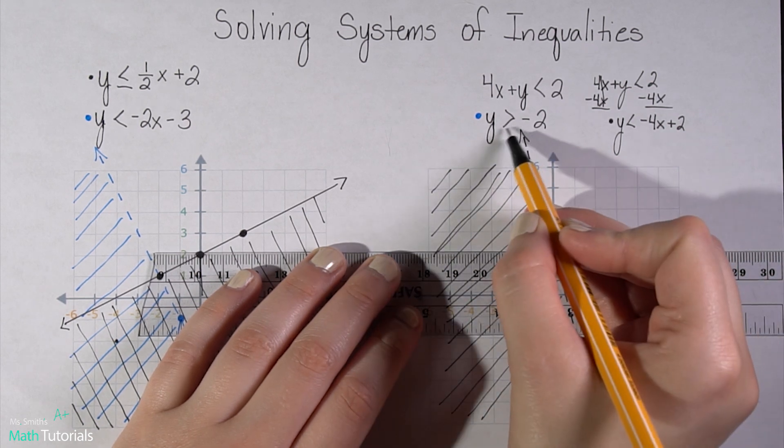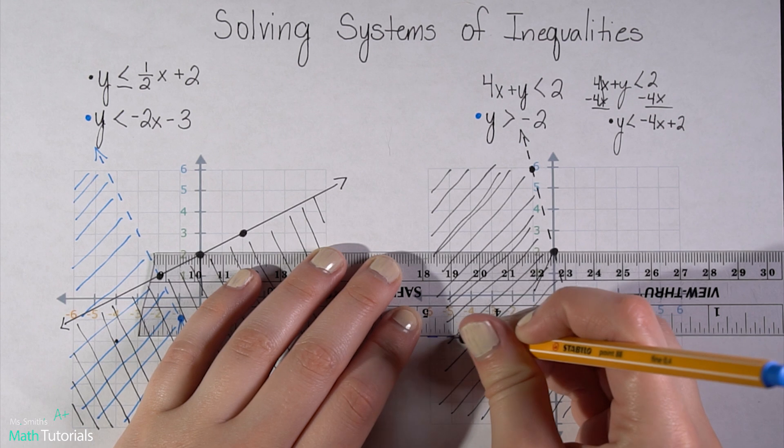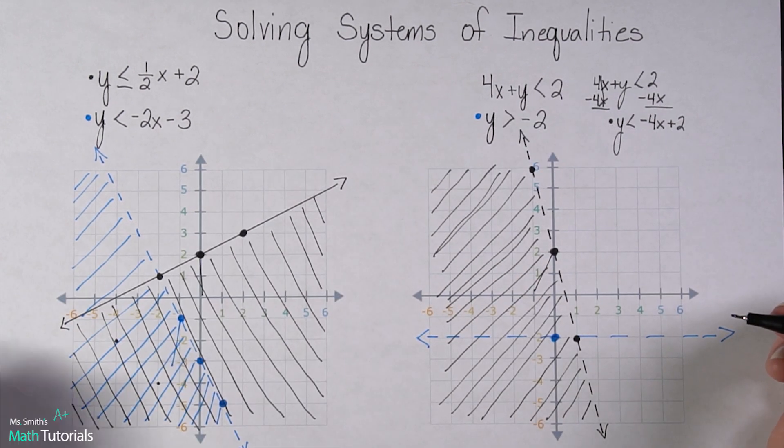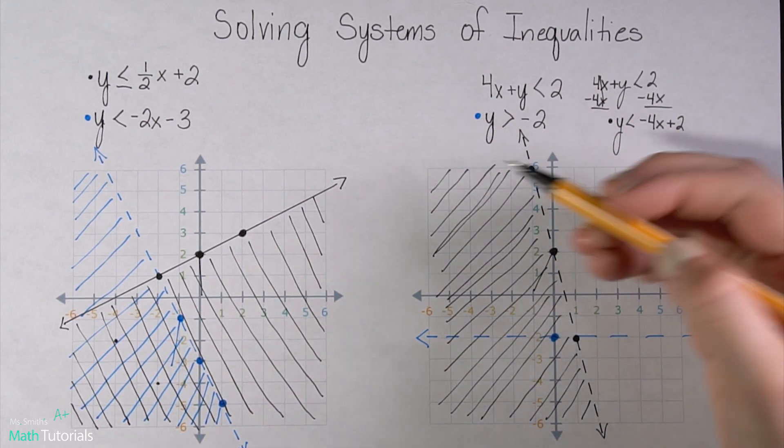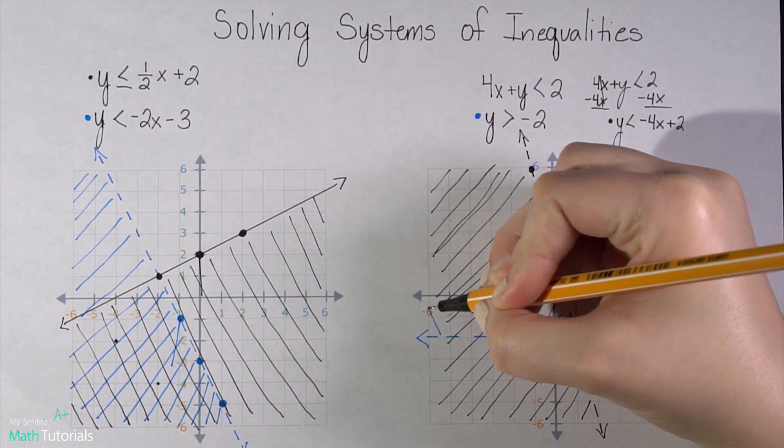Notice it's not or equal to, so I'm going to be doing a dotted line. Alright, and because it is greater than, I'm going to be shading everything above this horizontal line.